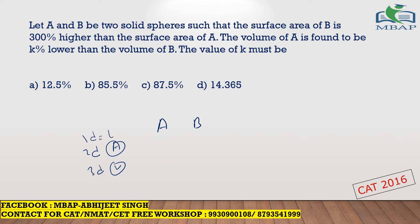Area is a two-dimensional figure and volume is a three-dimensional figure, with length as the one-dimensional figure above both. They are talking about surface area — whether lateral, total, or curved, area is always two-dimensional. They say B is 300 percent more than the area of A, which means if the area of A is 1, the area of B has to be 4. Four is 300 percent more than one.